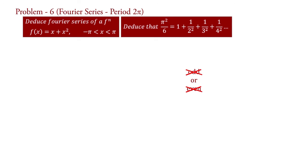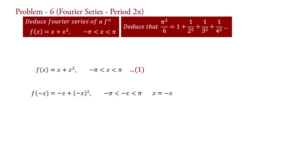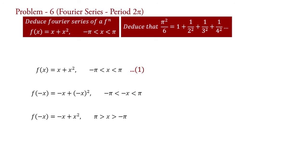If you are confused regarding that, then follow this process. Let f(x) = x + x² for −π < x < π, say equation 1. Take x = −x. Therefore, f(−x) = −x + (−x)² for −π < x < π. Now change the signs of the inequality and quantities. Therefore, f(−x) = −x + x² for π > x > −π.